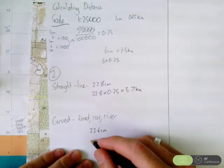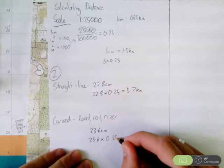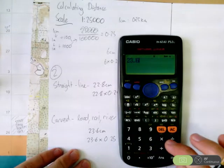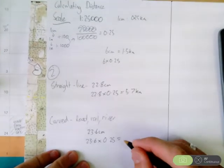We'll do the same conversion again, 23.6 times 0.25 is 5.9 kilometres.